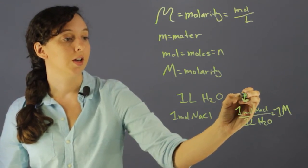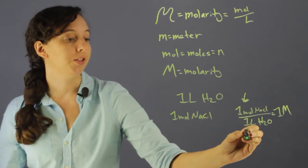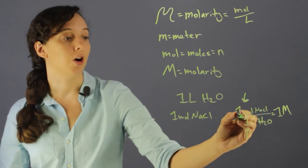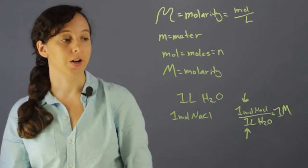So this is just the number of moles of what you're dissolving, and then this is just the number of liters of solvent. So it doesn't include the volume of what you're dissolving.